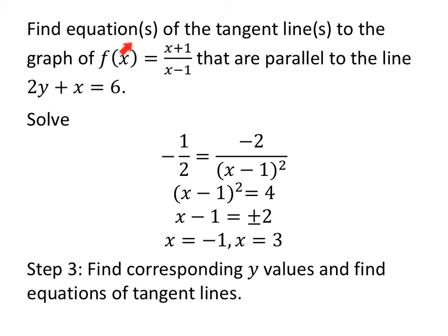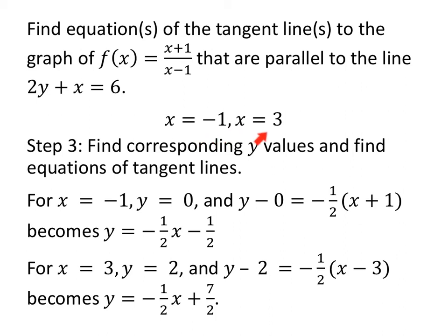But I'm not finished yet — find the equations of the tangent lines to the graph. Step 3: find the corresponding y values. For x equals negative 1: negative 1 plus 1 is 0 over negative 2, so y equals 0. The equation of the tangent line is y equals negative one half x minus one half. For x equals 3: 3 plus 1 is 4, 3 minus 1 is 2, so y equals 2. The equation of the tangent line is y minus 2 equals negative one half times (x minus 3). Distributing and adding 2 gives y equals negative one half x plus seven halves.